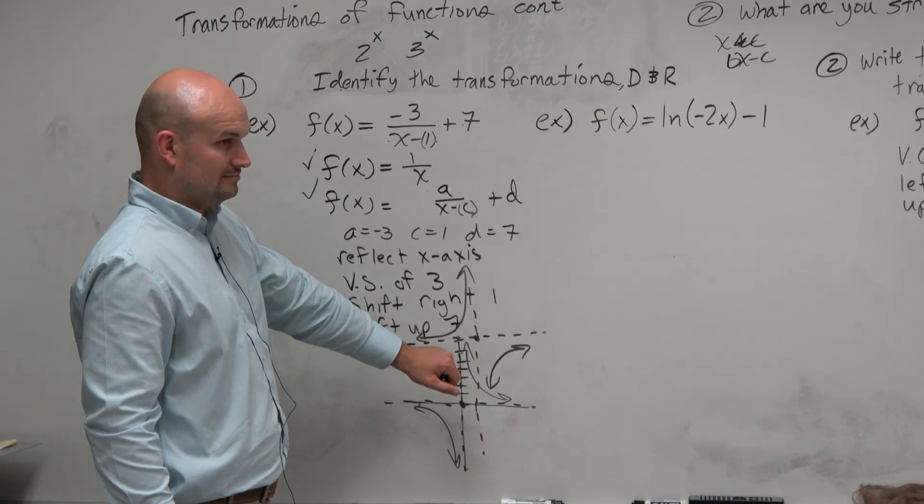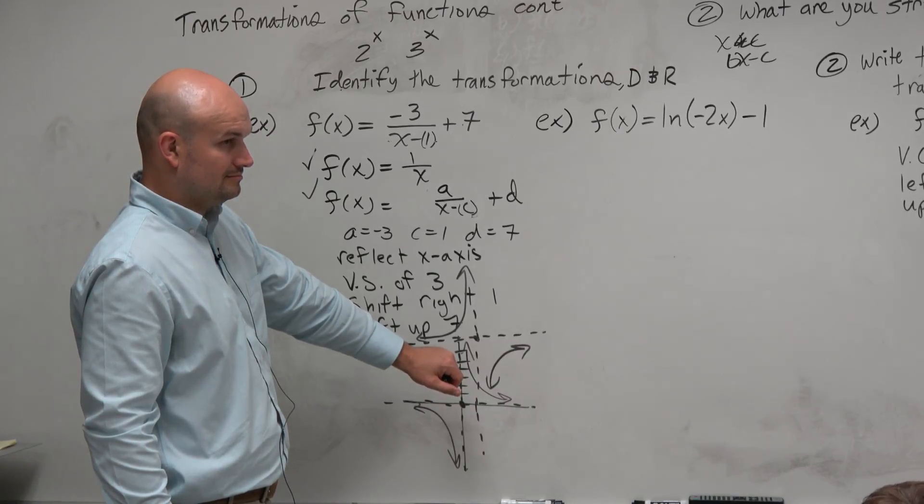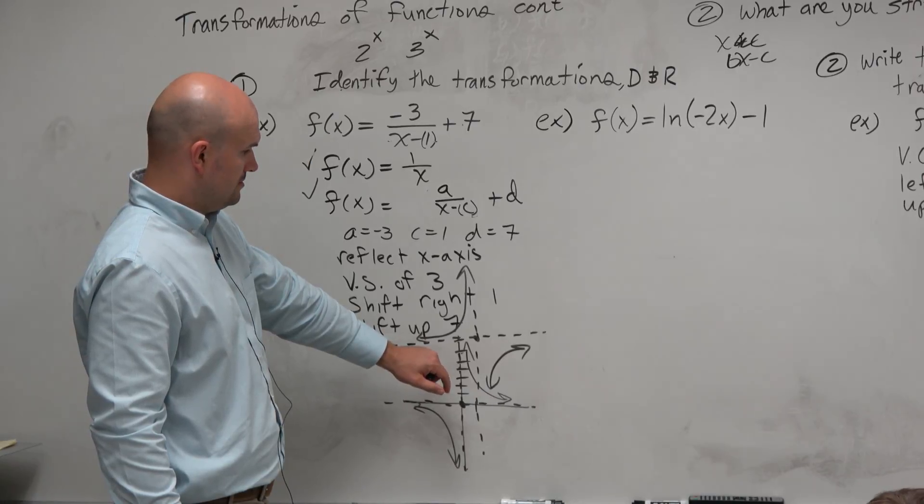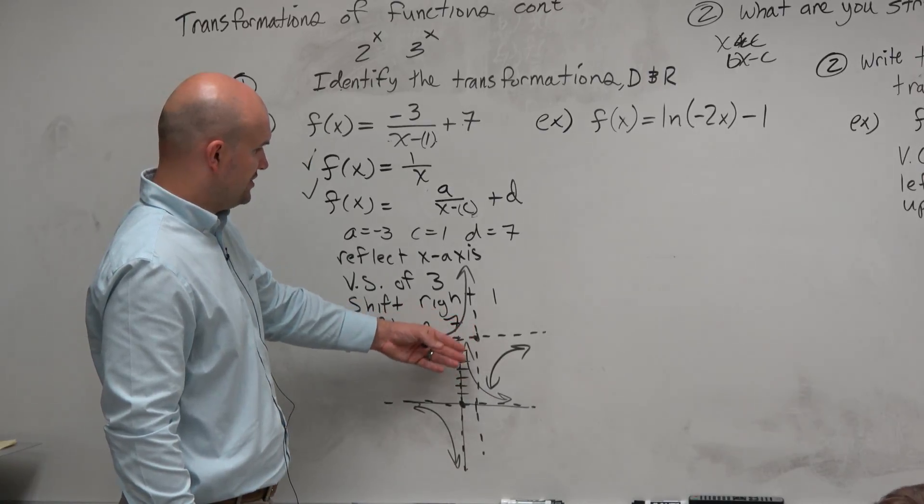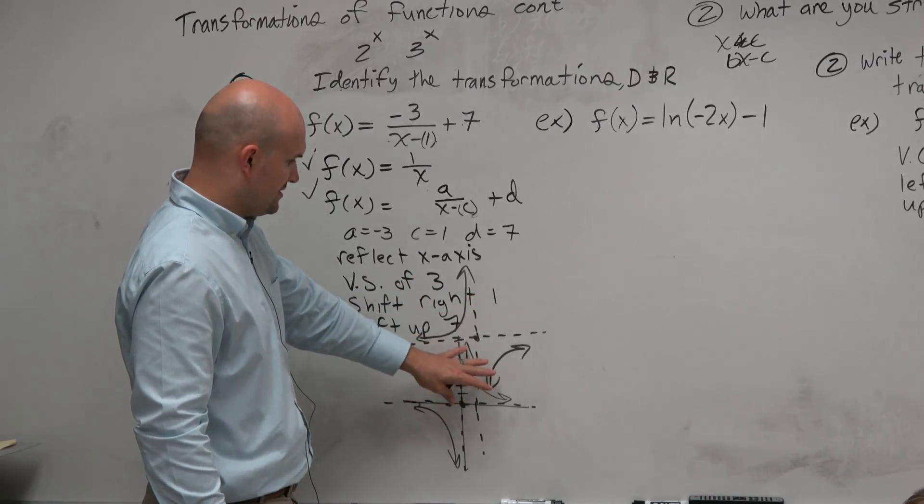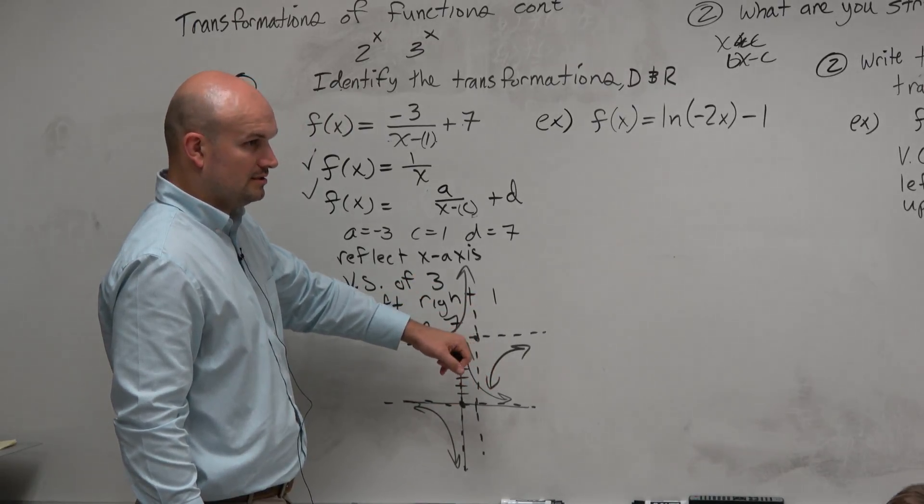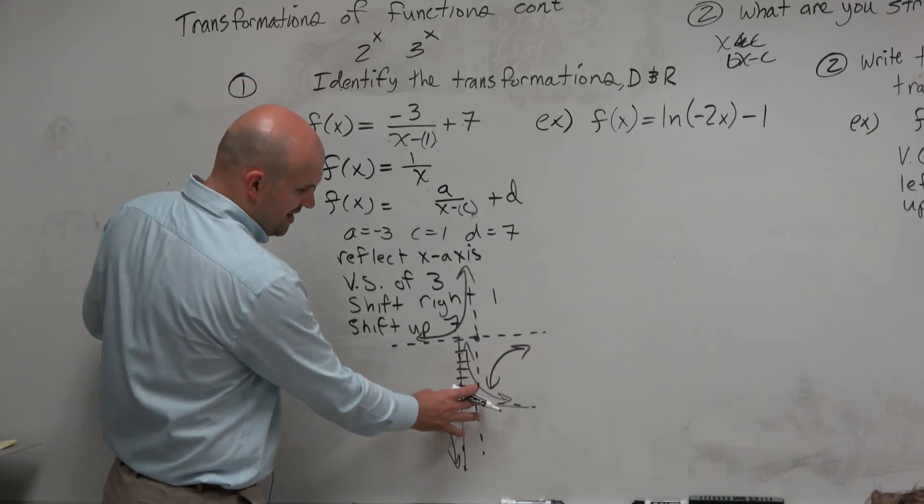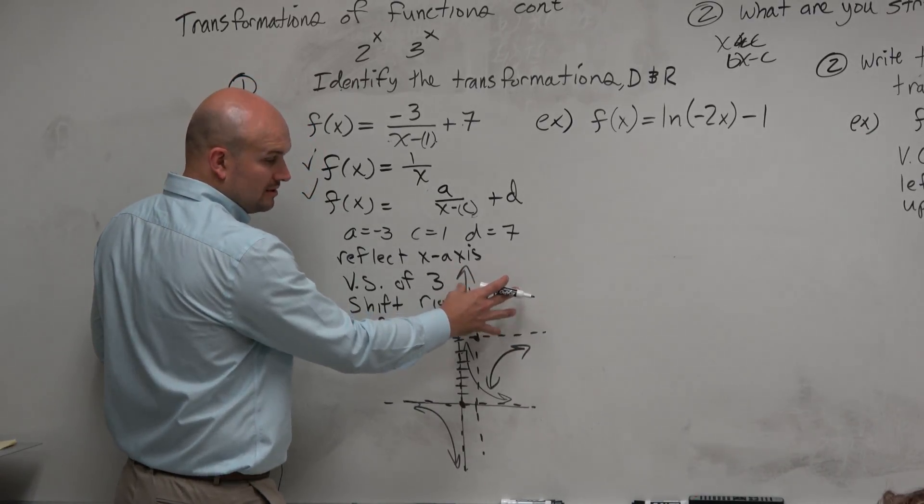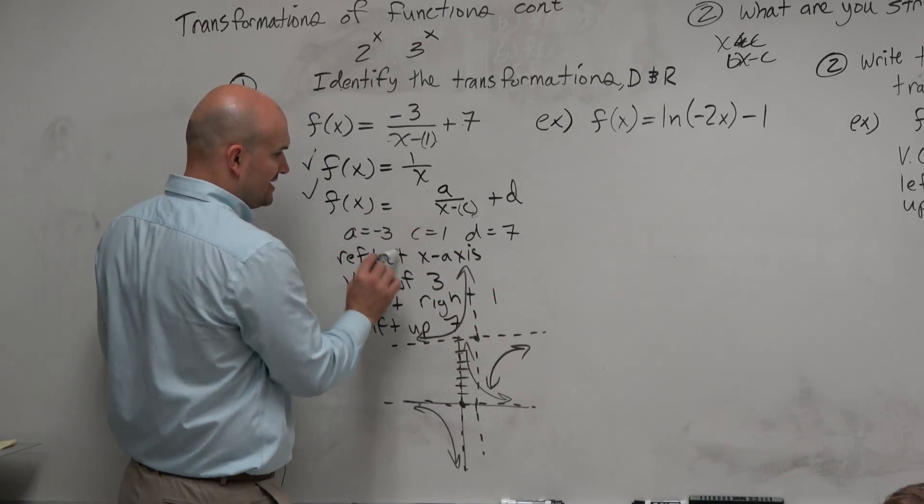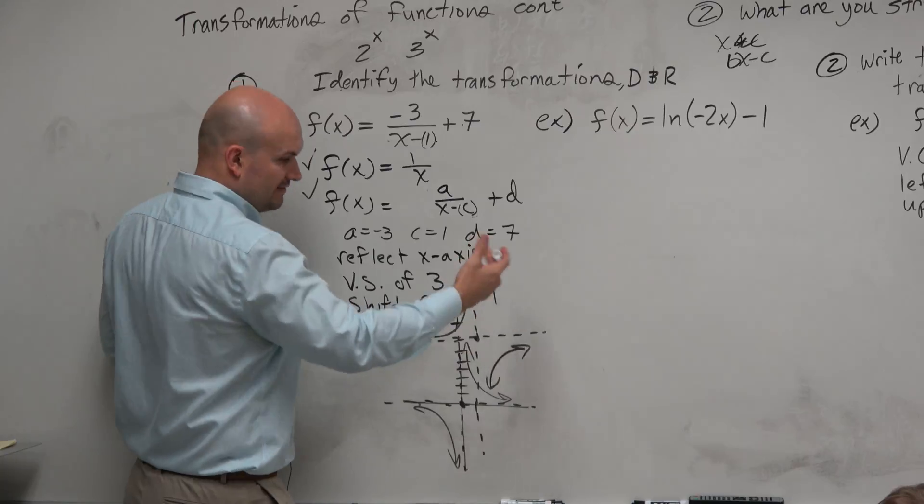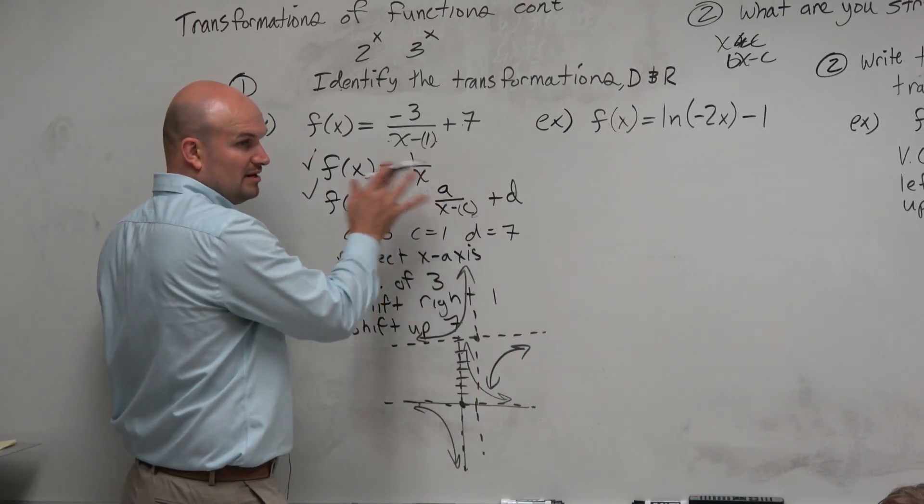So when you're shifting, you said that you don't move the line itself. Well, shifting it, yeah, I mean, you're moving the asymptotes, and then you also have to apply the reflection. The shifting is moving everything. See how this whole graph got shifted one unit to the right and then seven units up. But then it also got reflected about the x-axis. So that means everything that was above the x-axis is now below. Everything that's below the x-axis is now above.